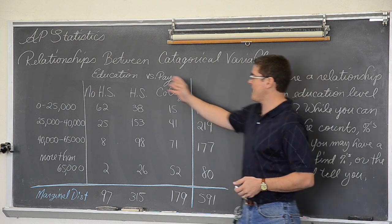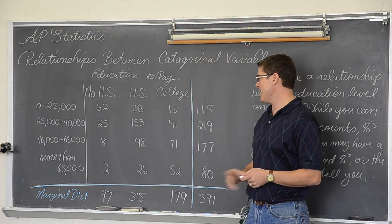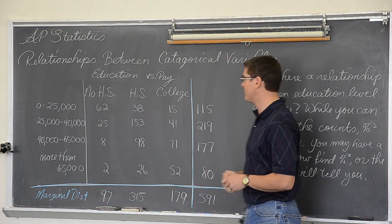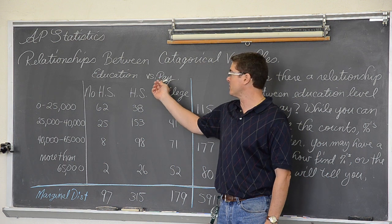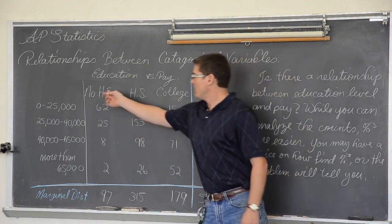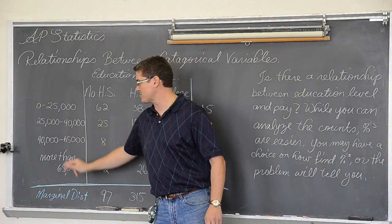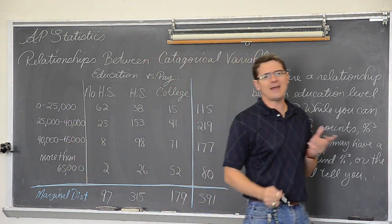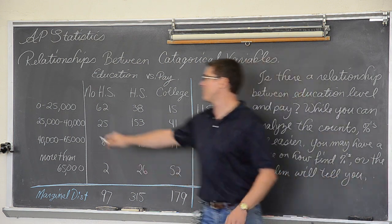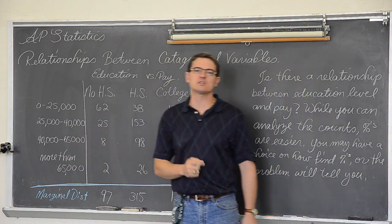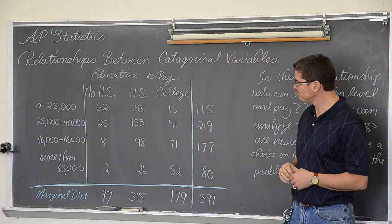So what I have done is I have pulled some information off the internet and used it to make up this two-way table studying the relationship between education levels and how much people are getting paid. So we have no high school, high school, and college. I have got some pay scales broken down by category. Now pay is money. Money can be averaged. You might think that is a quantitative variable. But when you break it into categories of income, well now it is no longer quantitative but categorical.